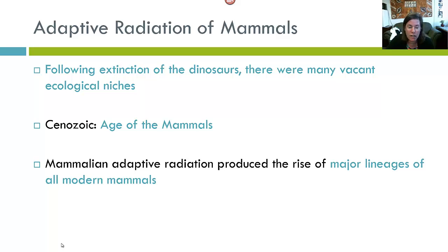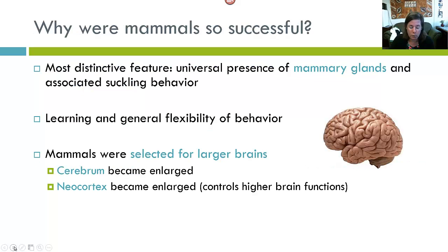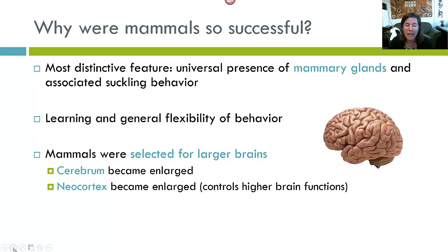The mammalian adaptive radiation of the Cenozoic saw the rise of major lineages of all modern mammals. Mammals, along with birds, replaced reptiles as the dominant terrestrial vertebrates. The most distinctive feature of mammals is the universal presence of mammary glands — milk-producing mammary glands — as well as their associated suckling behavior. Several characteristics related to learning and general flexibility of behavior are also of prime importance in accounting for the evolution of mammals. To process more information, mammals were selected for larger brains.